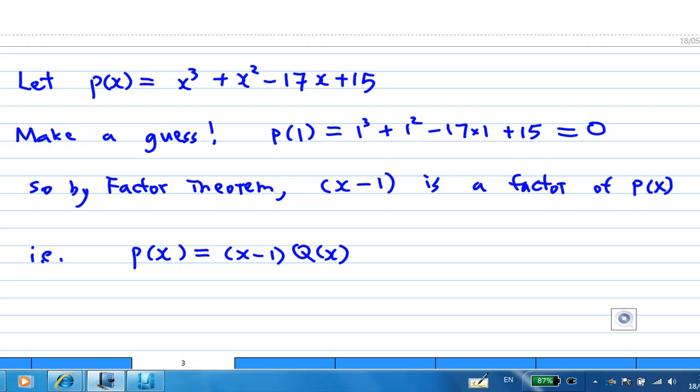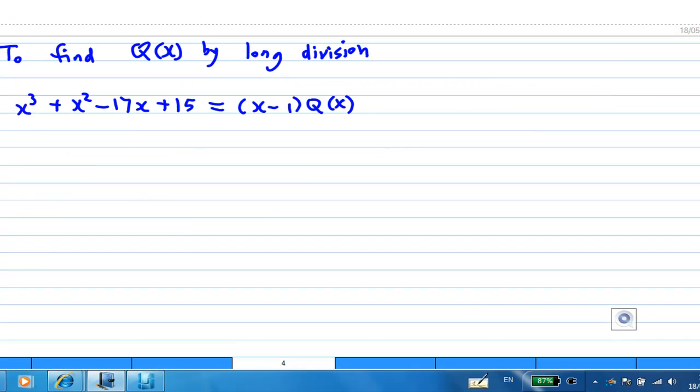How do we find this quotient? You can do a long division. So p(x) is x cubed plus x squared minus 17x plus 15 equals x minus 1 times q(x). So let's do a long division here. I have x cubed plus x squared minus 17x plus 15, and I'm going to divide this by x minus 1.